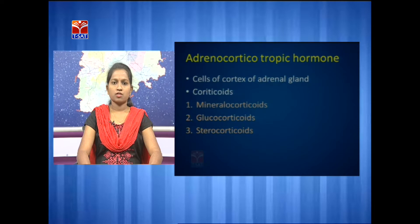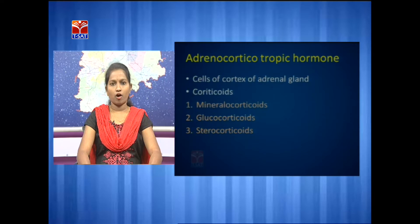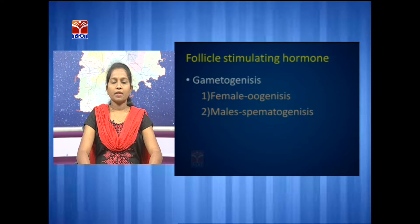The next hormone is adrenocorticotropic hormone. This hormone acts on the cells of the adrenal cortex of the adrenal gland, stimulating the cells to produce hormones called corticoids — mineralocorticoids, glucocorticoids, and sterocorticoids.